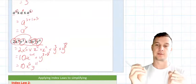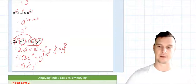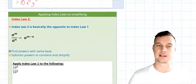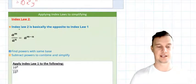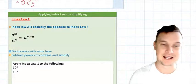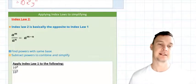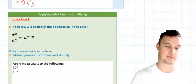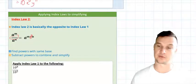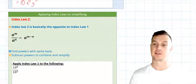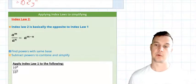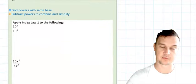Now if we look at index law two, it's effectively the opposite to index law one. And we'll see here that we're now working with division. So a to the m over a to the n is the same as a^(m minus n). So division is opposite to multiplication; subtraction is opposite to addition. So now instead of adding our powers, we're going to be subtracting them when we're using division. So again, we follow the same process: we find the powers with the same base, and then we subtract and combine.